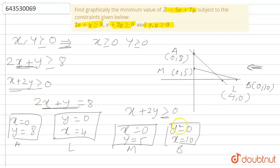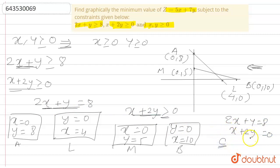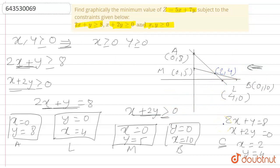Now solving these two equations — 2x + y = 8 and x + 2y = 10 — simultaneously, we get their intersection point C, which is x = 2 and y = 4. So point C is (2, 4).